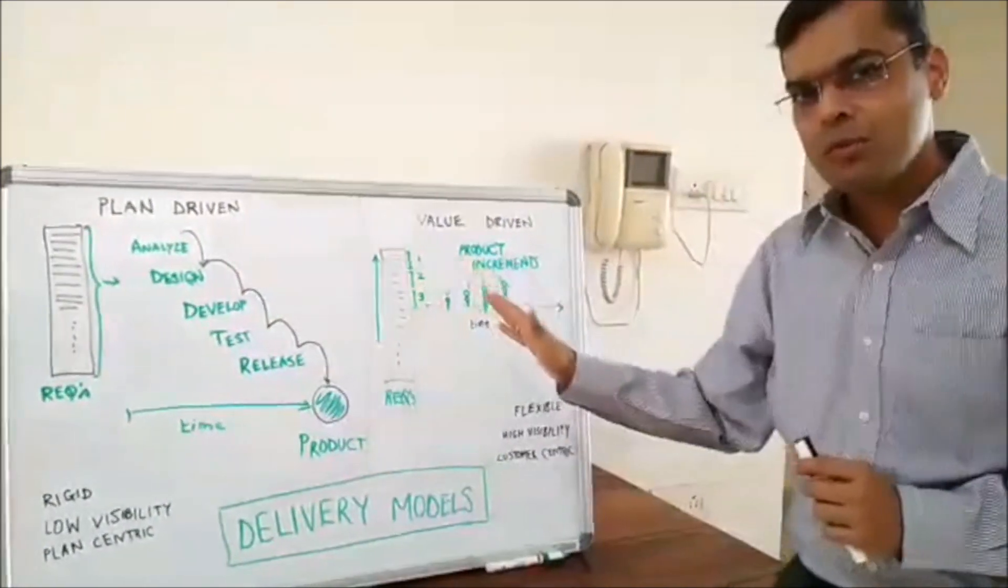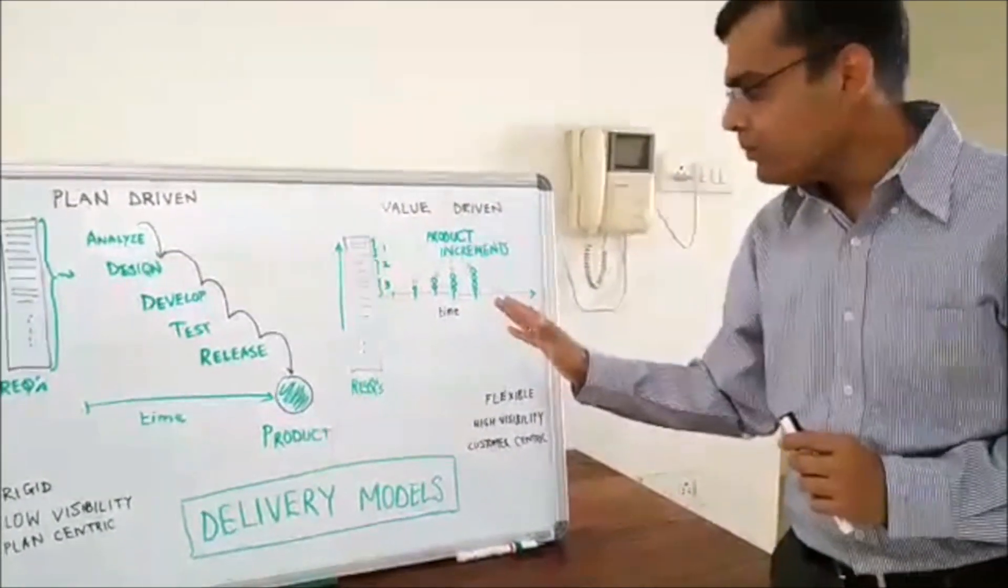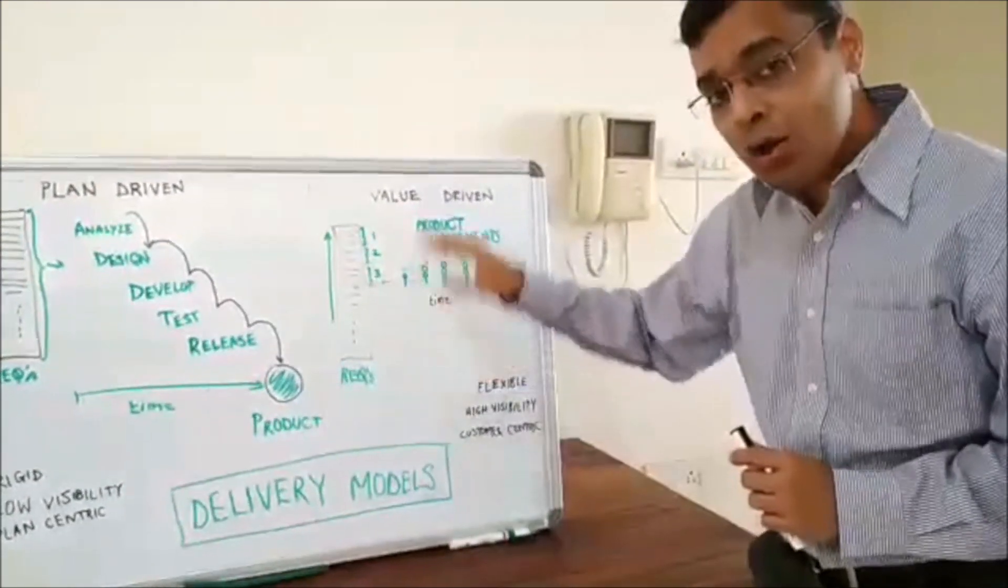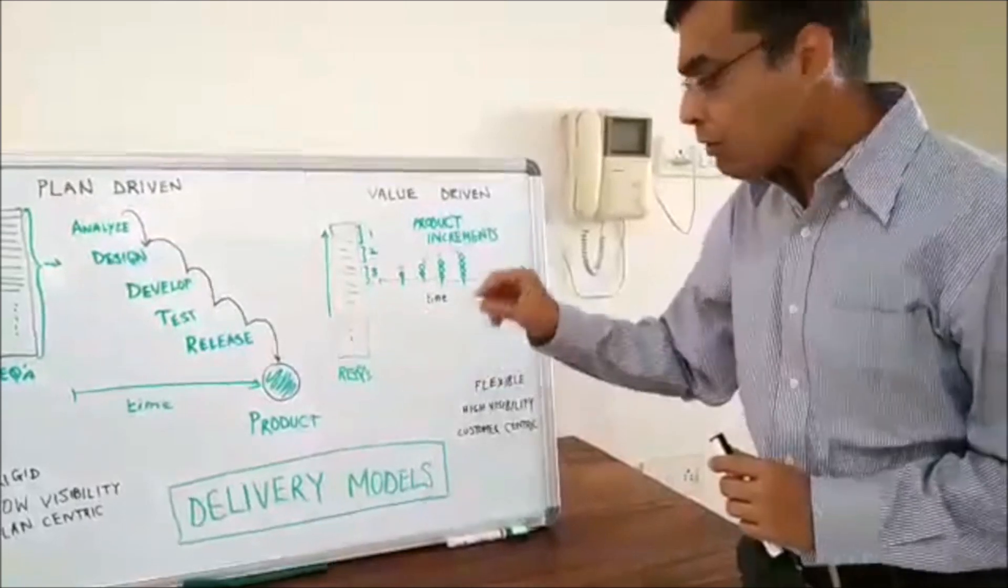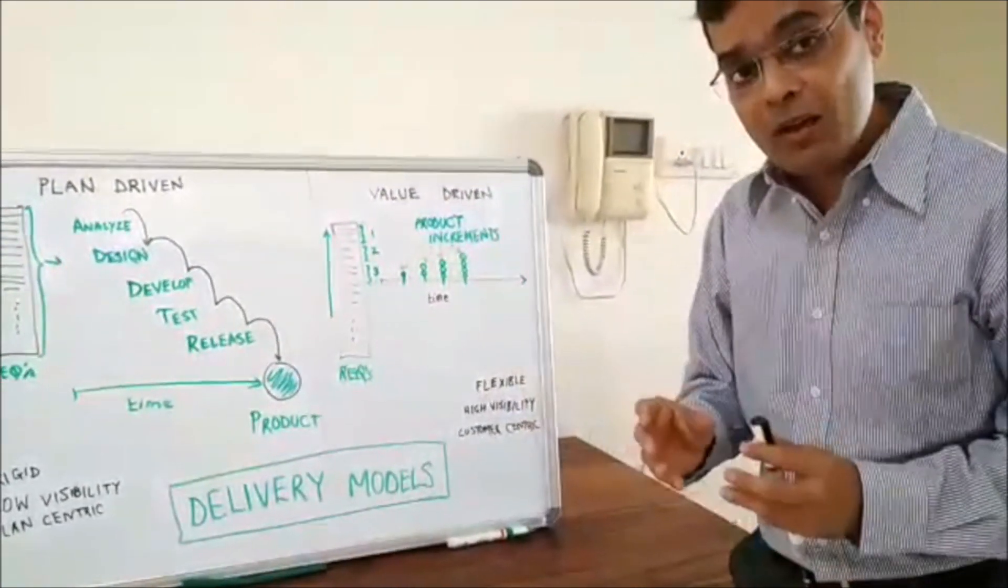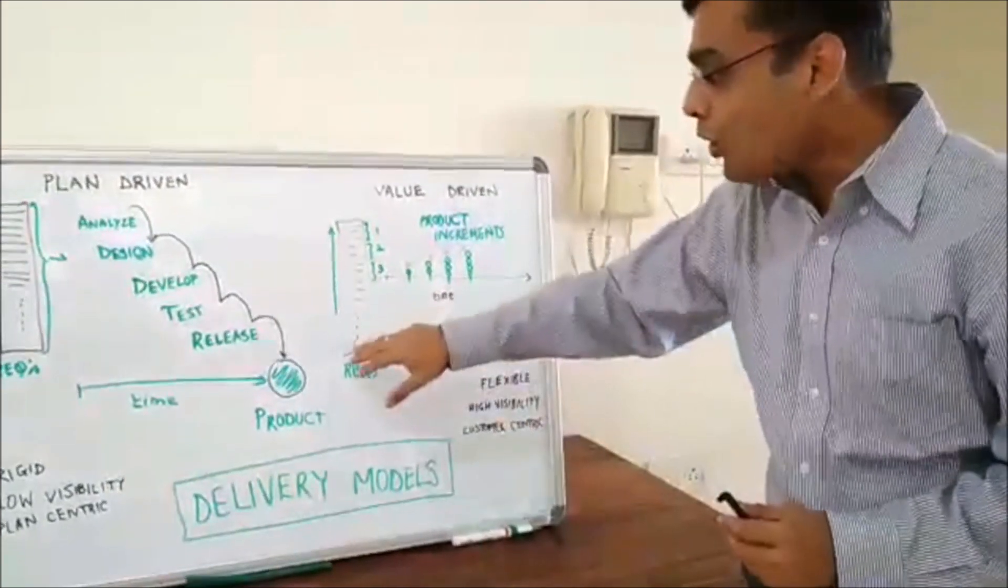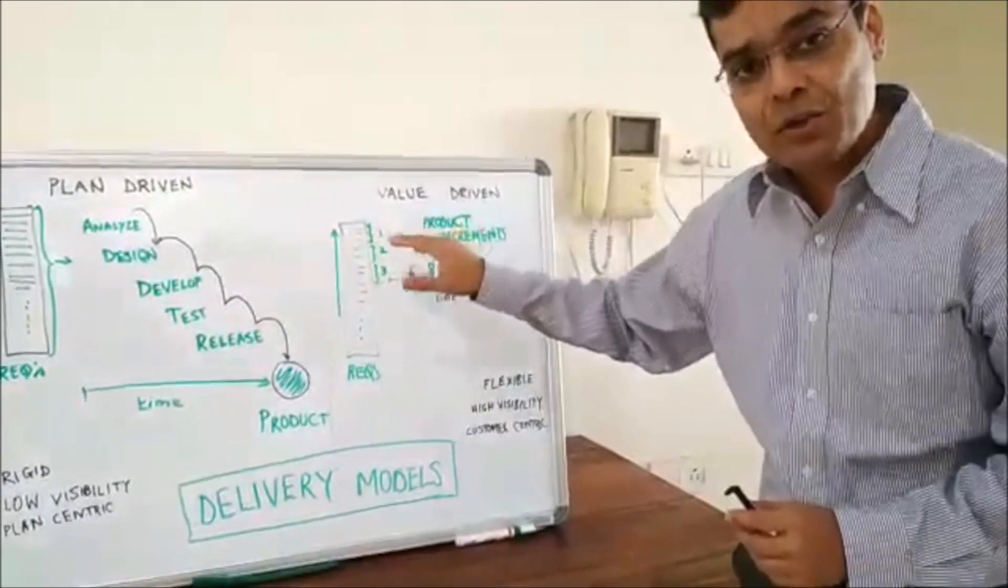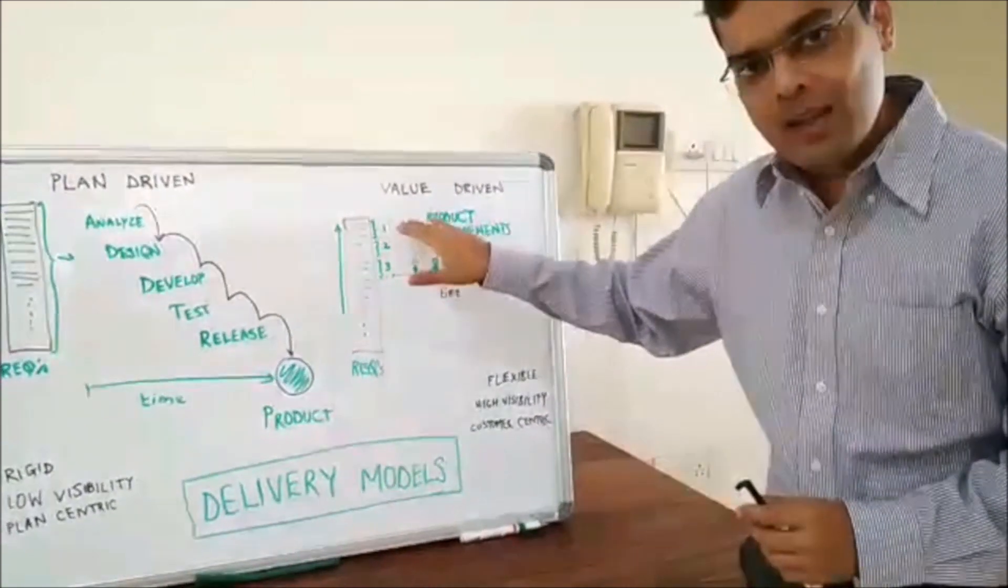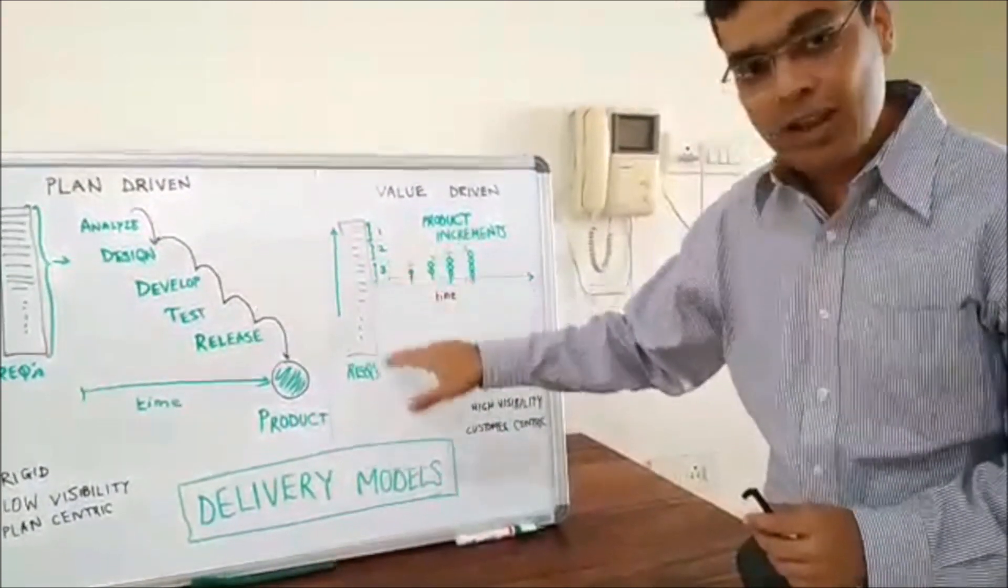Now let's switch over to value-driven model. Value-driven model, you have the requirements, you don't need to know all the requirements upfront though. What will happen is say you know a bunch of requirements which are very valuable for the customer. So you order these based on values. The highest value items will be always on top and lower value at the bottom.